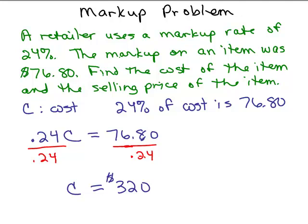Now the question is, what's the selling price? Well, you add what you marked it up. You marked it up $76.80. So you have to take the original cost, add how much you marked it up, and that should give us our answer for the selling price.